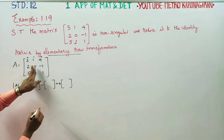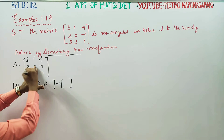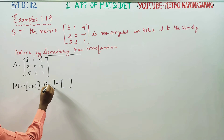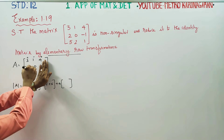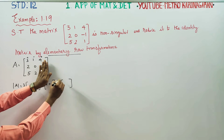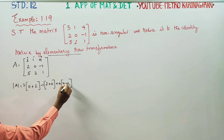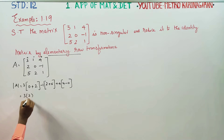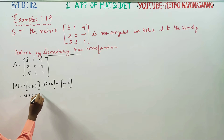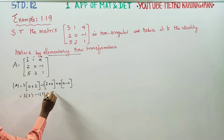Continuing: minus 1 times (2 × 1 minus (minus 1) × 5) — the right-hand side is 2, left-hand side is minus 5, already negative so plus 5. Plus 4 times (2 × 2 minus 0 × 5) — right-hand side 4, left-hand side 0.